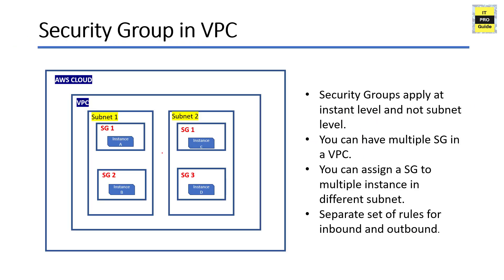Now let us see how we can use security groups in a virtual private cloud VPC. Security groups apply at the instance level, not the subnet level like network ACL. You can have multiple security groups in a VPC and you can assign up to five security groups to the same instance. When we learned about network ACL, we learned it can apply only to one subnet at a time. You cannot have multiple NACLs on a single subnet, but here the case is different — you can have up to five security groups on the same instance.